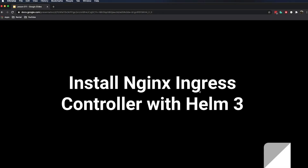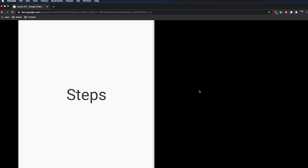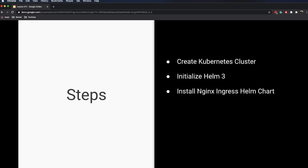In this video we're going to talk about how to install nginx ingress controller with Helm 3. We're going to start by creating a very simple basic Kubernetes cluster in AWS using the eksctl command. The next step will be to initialize Helm 3 on our cluster, and then we're going to install the nginx ingress Helm chart using values from the original repository.